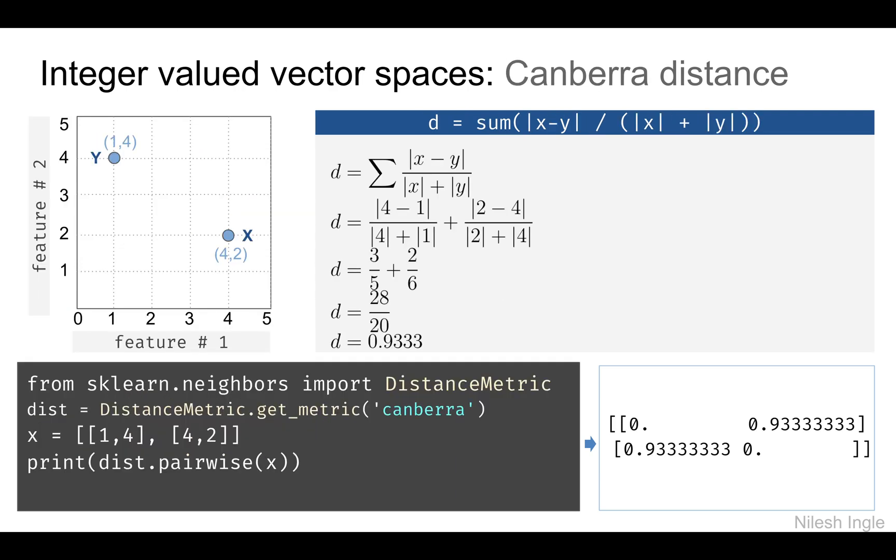Now we have the Canberra distance. It is given by this relation shown here: the absolute difference between x and y divided by the sum of absolute x and absolute y. For these two data points, we have 4 minus 1 divided by absolute value of 4 plus absolute value of 1, and same for the y coordinates. The distance is 0.933.